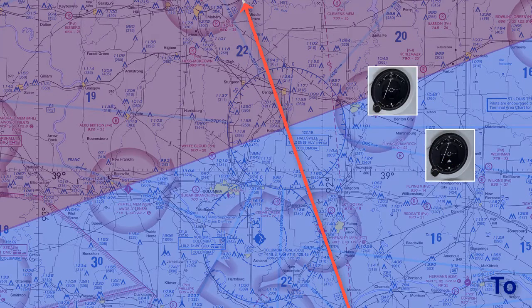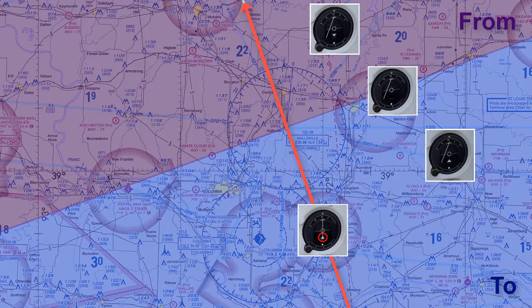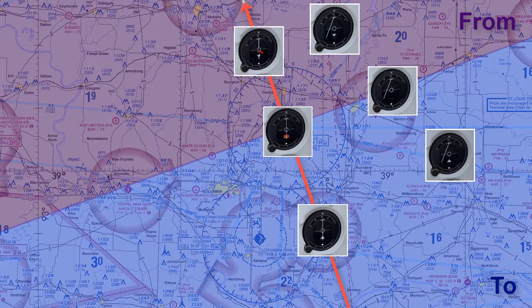If we are even with the VOR there will be no flag and the needle will point to the left. If we are flying in the FROM quadrant the flag will indicate FROM with the needle pointing to the left again. If we are on course the flag will indicate TO when heading towards the VOR, or FROM when flying from the VOR, but the CDI needle will be centered in all three cases.